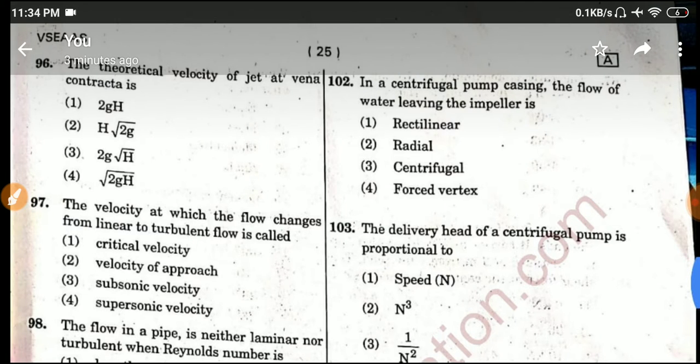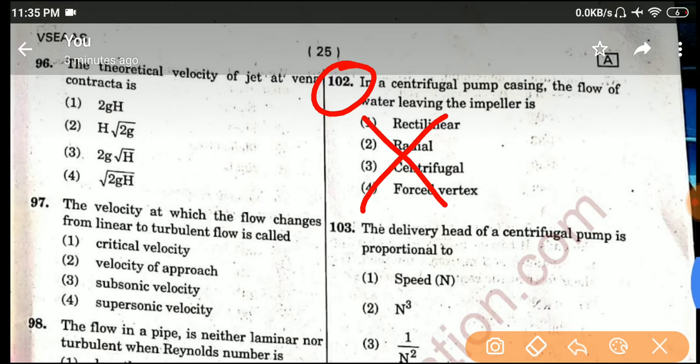Next question, question number 102. In a centrifugal pump casing, the flow of water leaving the impeller is...the options are deleted, so one mark is added to everyone.